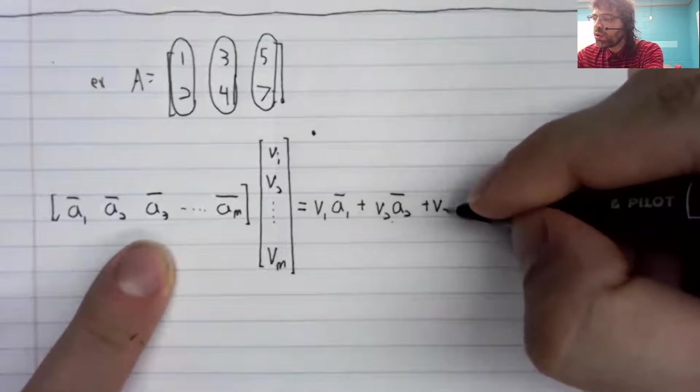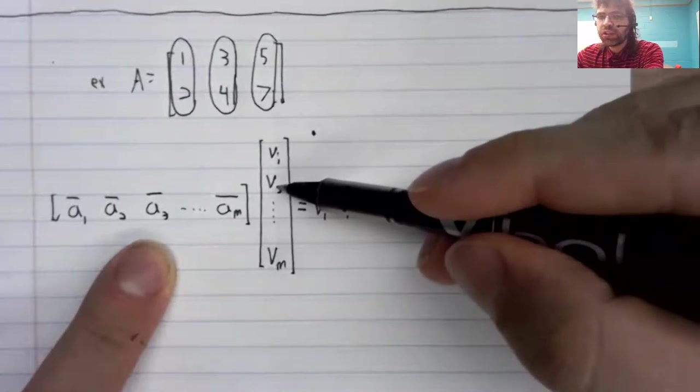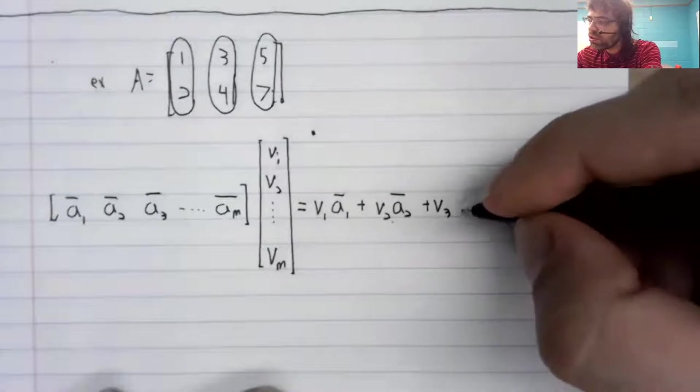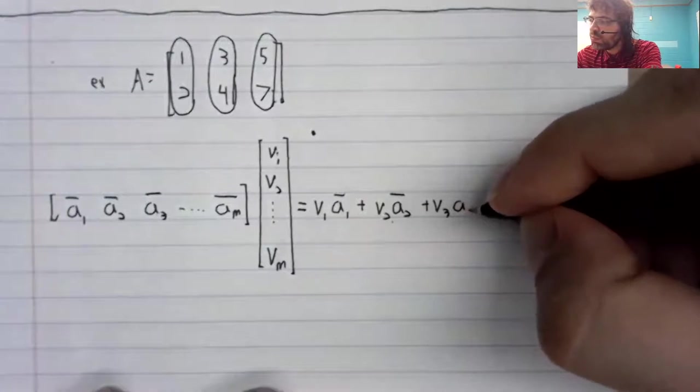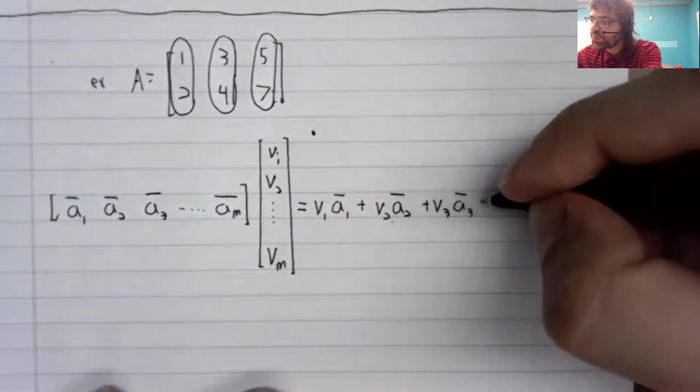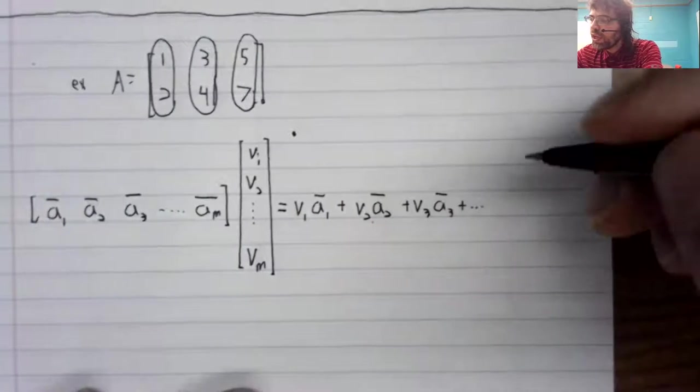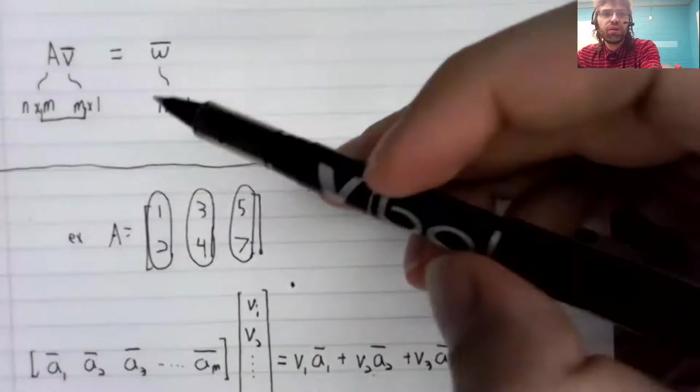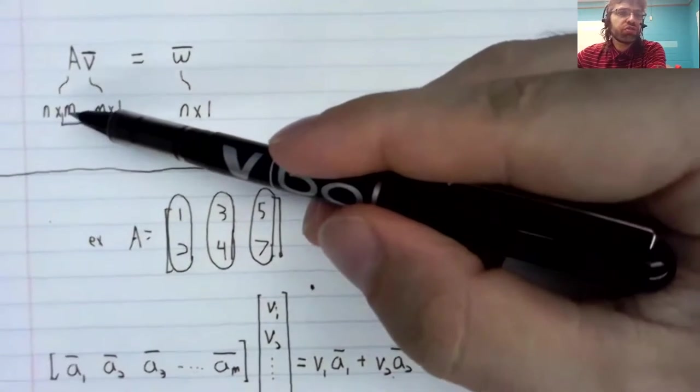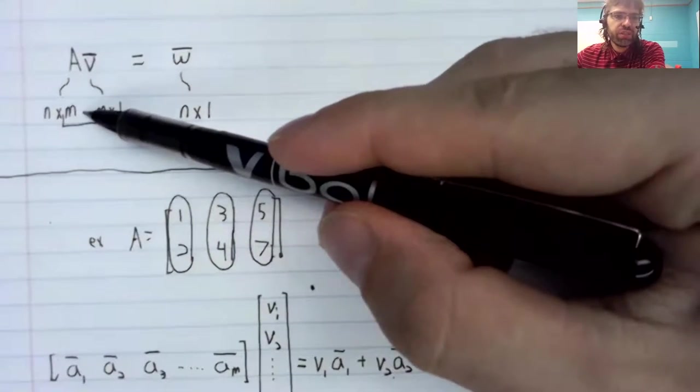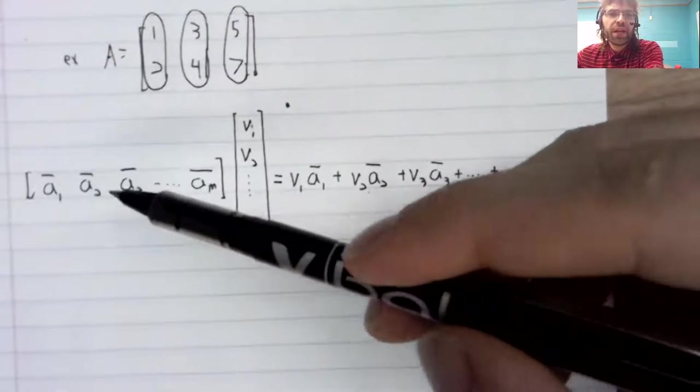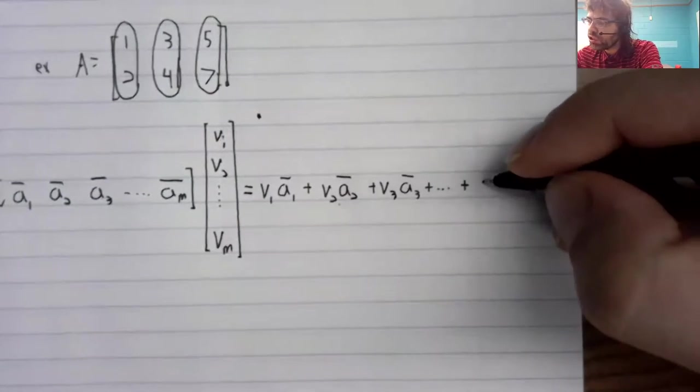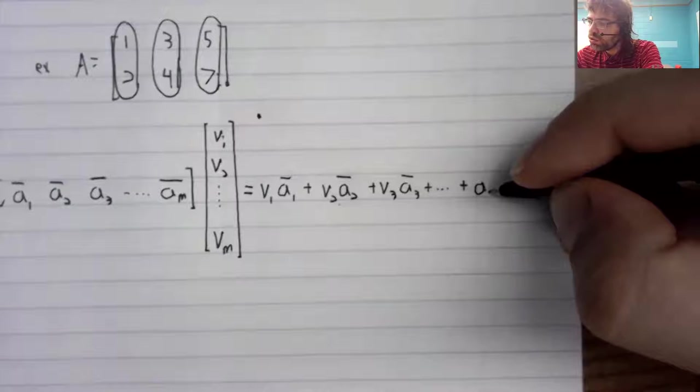And so on down the line, the third entry here scalar multiplied by the third column. And because of this restriction, we'll have as many columns as we have entries. And we'll stop.